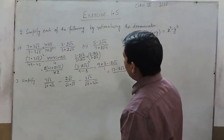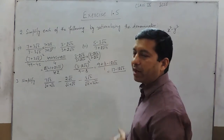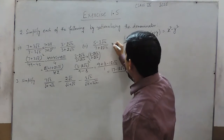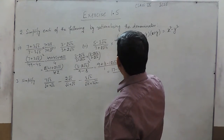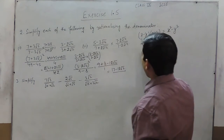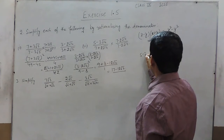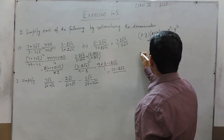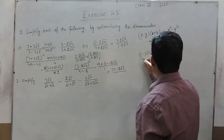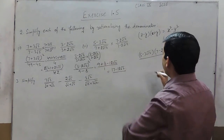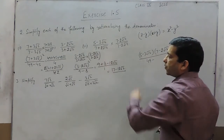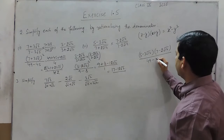Looking at the third part, the procedure is the same for rationalizing the denominator. This has to be multiplied by (7 minus 2 root 14) upon (7 minus 2 root 14). The denominator becomes 49 minus 4 times 14, which is 49 minus 56.